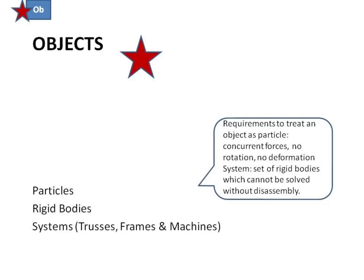There aren't very many of them. In general, we had particles, rigid bodies, and systems. The biggest thing you've got to be able to do when we start talking about objects is identify which one is which from any given problem.